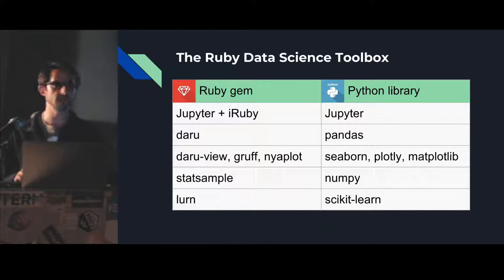It's kind of a data frame vector that provides the basic data structures that are commonly used in data science. DaruView, Gruff, NyaPlot, they're all plotting libraries. So if you need a cool or interesting graph of something, those are your go-to. Statsample provides statistical tests and algorithms like logistic regression, linear regression.